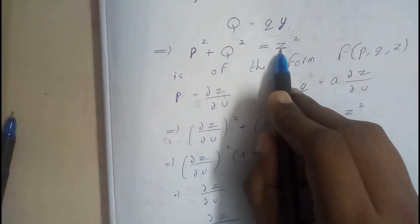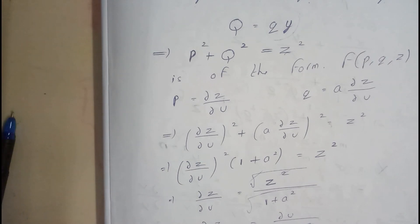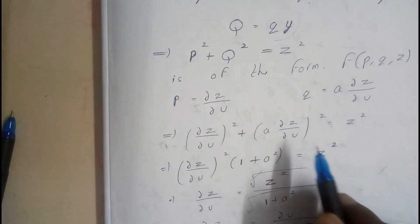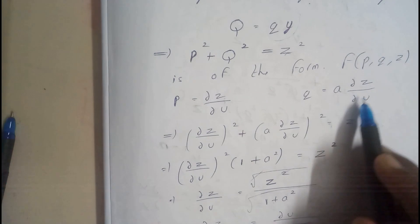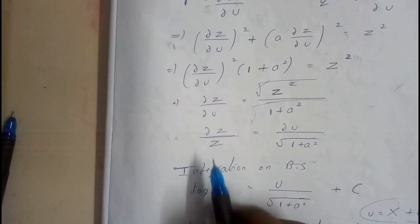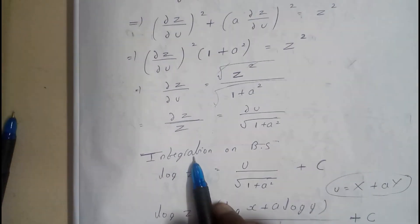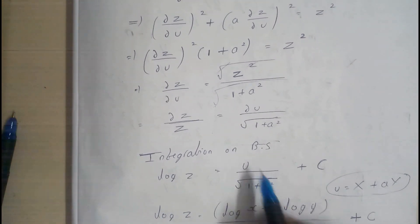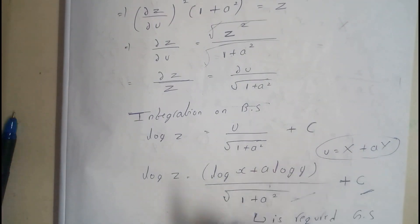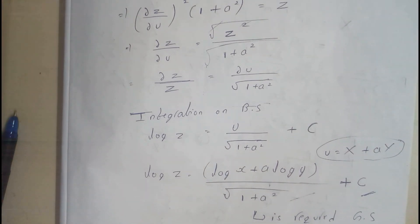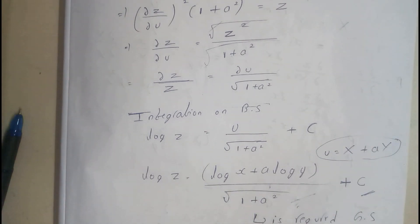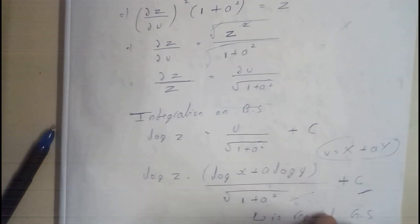Now we can apply the second method. We get P = ∂z/∂u and Q = a · ∂z/∂u. Substituting and continuing, at some point we apply the variable separable method and integration on both sides, getting the final value. Here u = X + aY, where X = log x and Y = log y, giving us the required general solution.